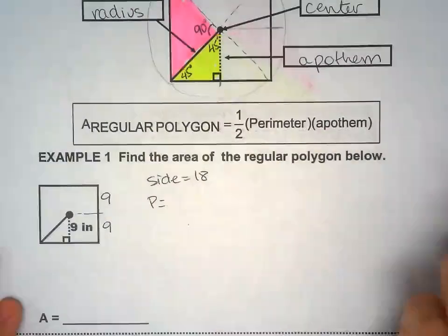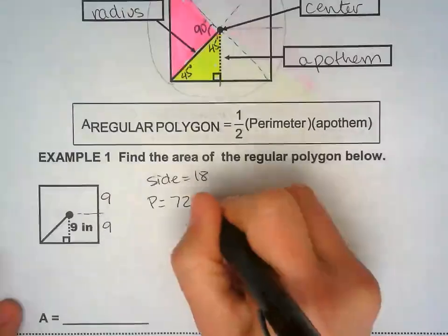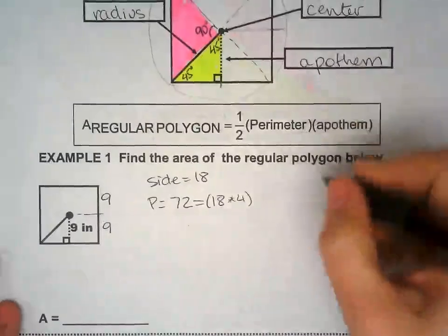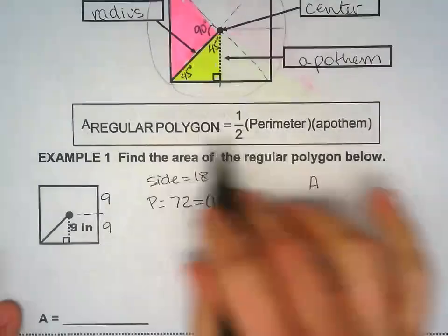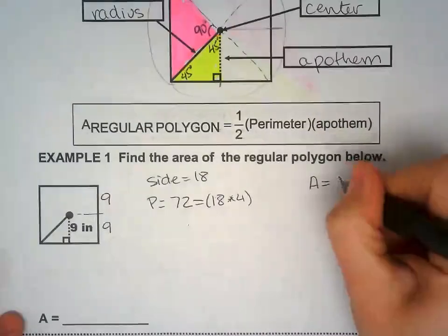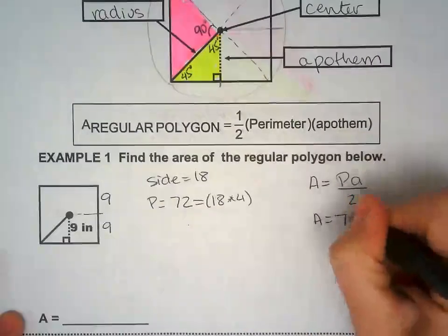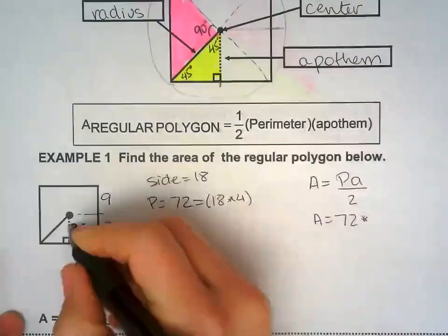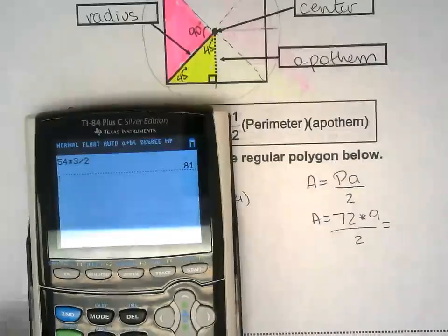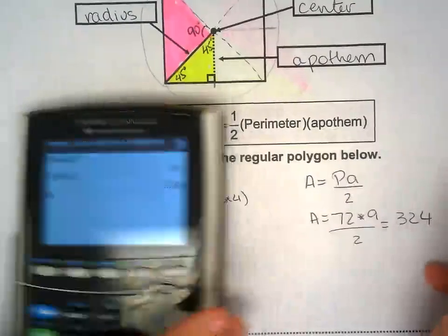Perimeter, 18 times 4. So we're gonna apply the formula here, but you really don't have to. So I'm gonna do it both ways. Perimeter times apothem, divide by 2. Perimeter 72, apothem 9, divide by 2. 324.